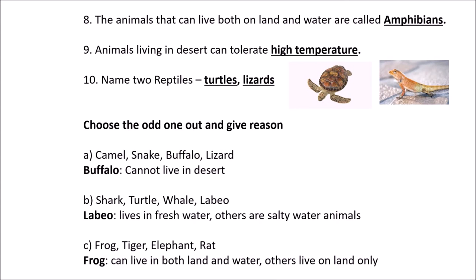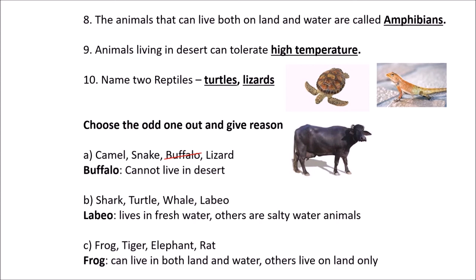Cross out the odd one out and give a reason. 1. Camel, snake, buffalo, lizard — buffalo is the odd one out because buffalo cannot live in the desert. 2. Shark, turtle, whale, Labio — Labio is the odd one out because it lives in fresh water while the others are salty water animals. 3. Frog, tiger, elephant, rat — frog is the odd one out because frog can live in both land and water, while the others live on land only.